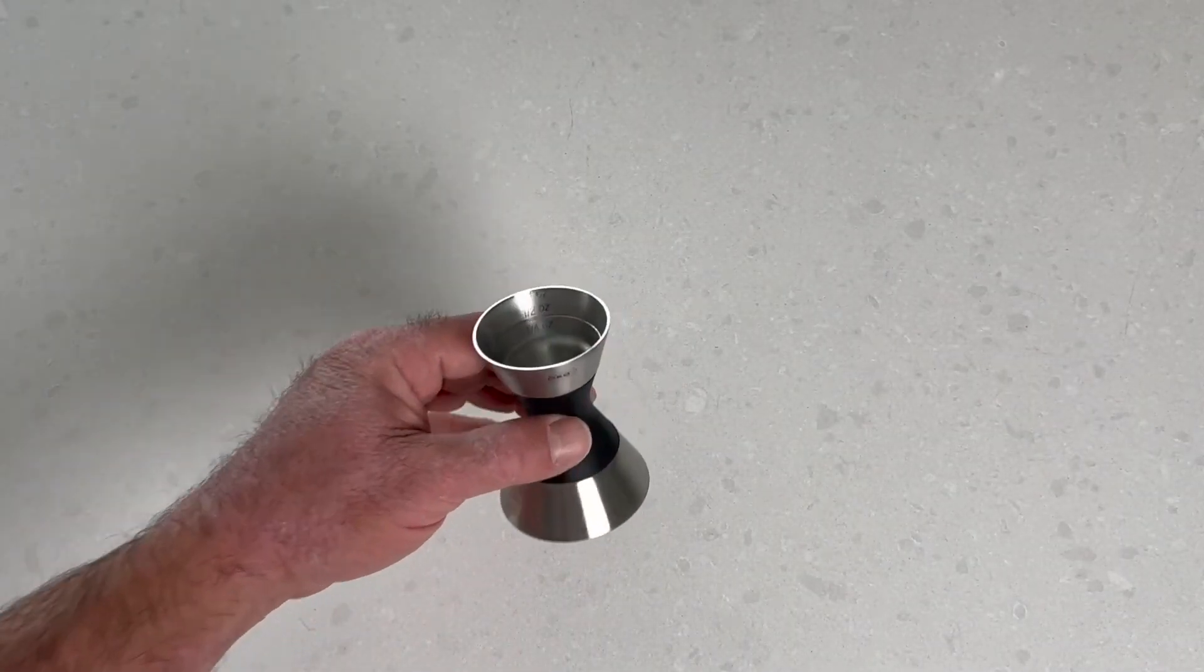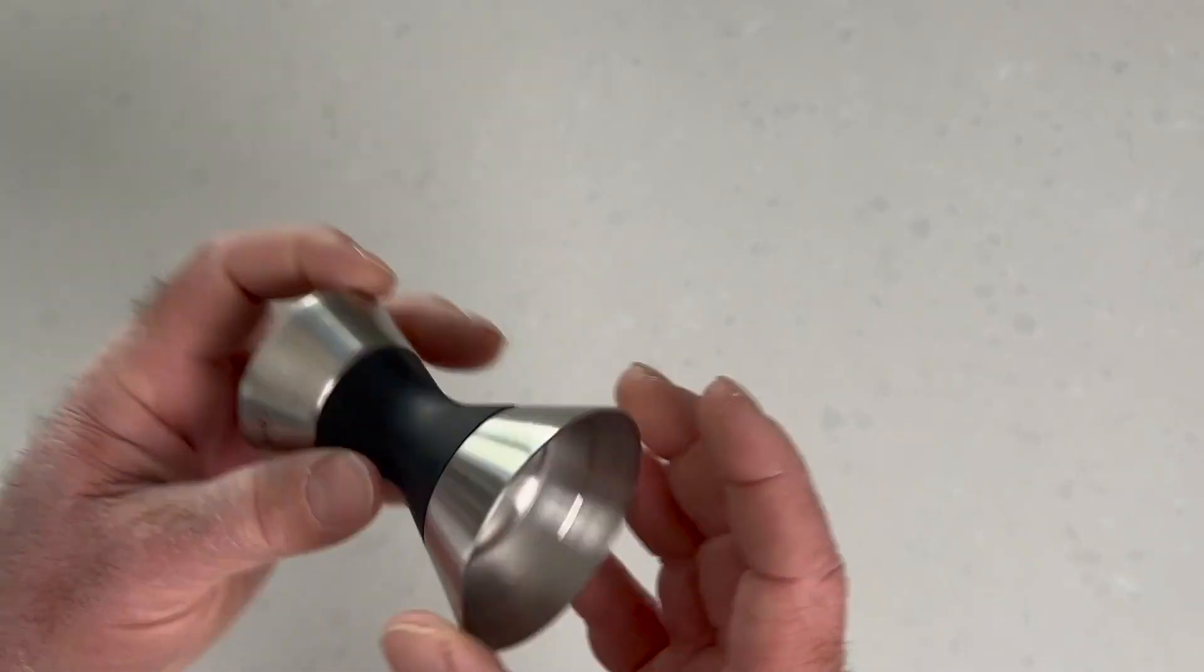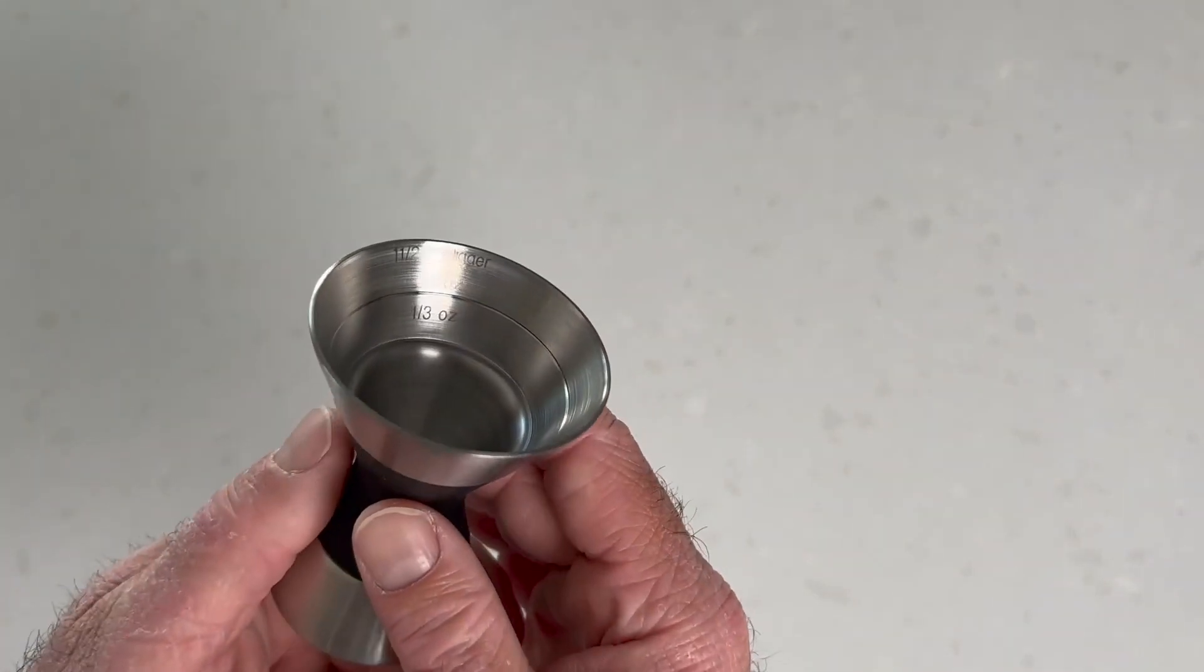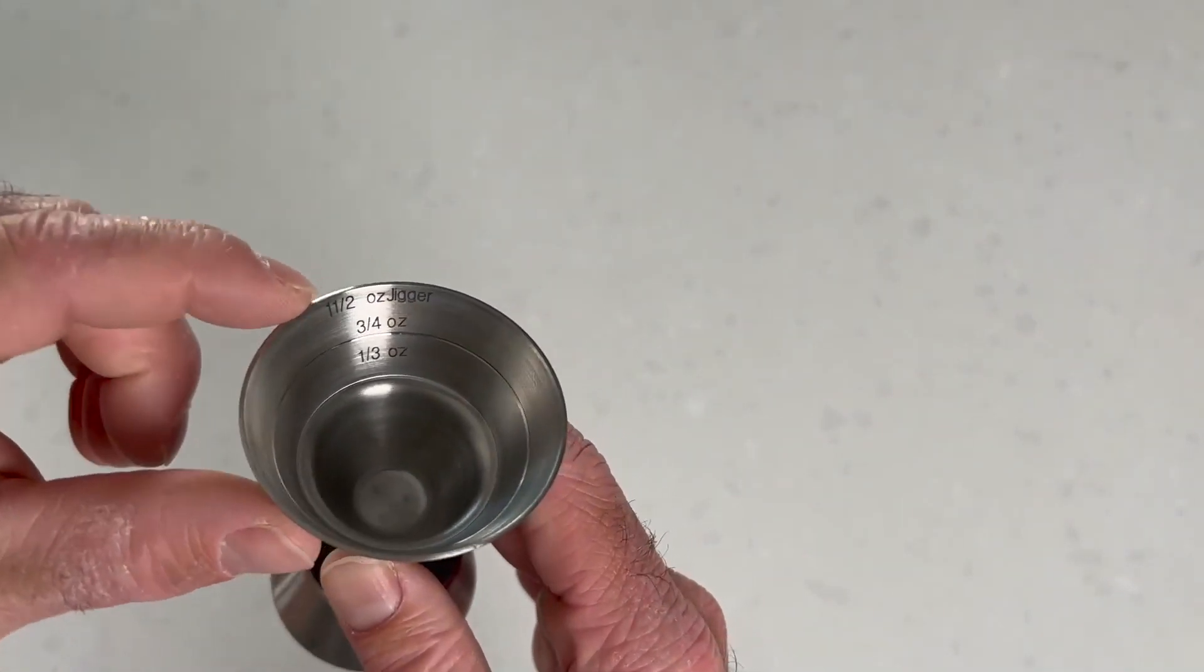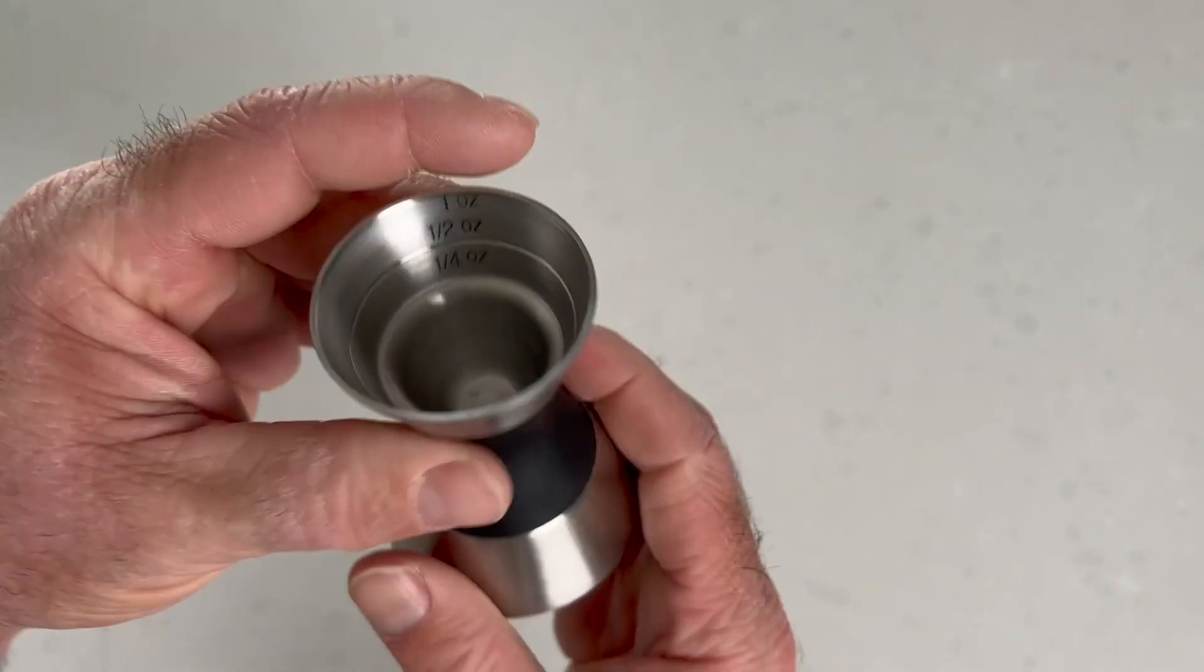Hey Garrett here with a quick look at the double-sided OXO Jigger. This has a one-ounce side and an ounce-and-a-half side. Everything is labeled on the measurement so you can see the different levels and measure with precision.